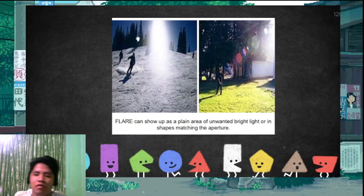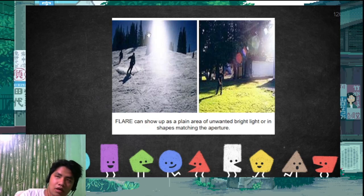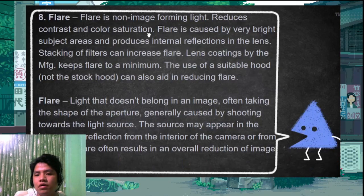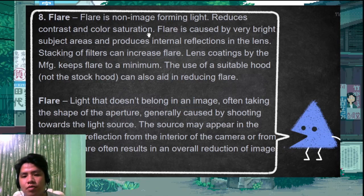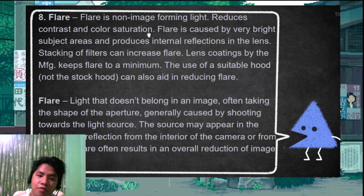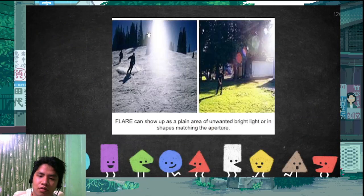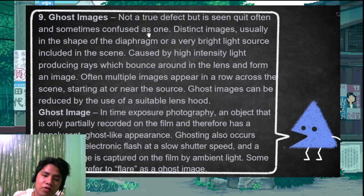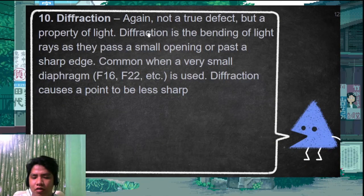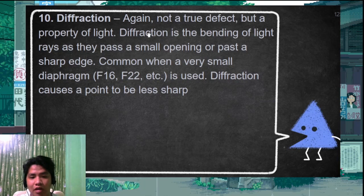Flare is when light is not controlled by the lens and aperture — it is caused by very bright subject areas producing internal reflections within the lens, reducing image quality. Ghost images are not a true defect — they are images that appear human-like but are not actually human; they result from light reflections appearing as extra figures in the image. Diffraction is a property of light wherein light bends as it passes a small opening or a sharp object edge.